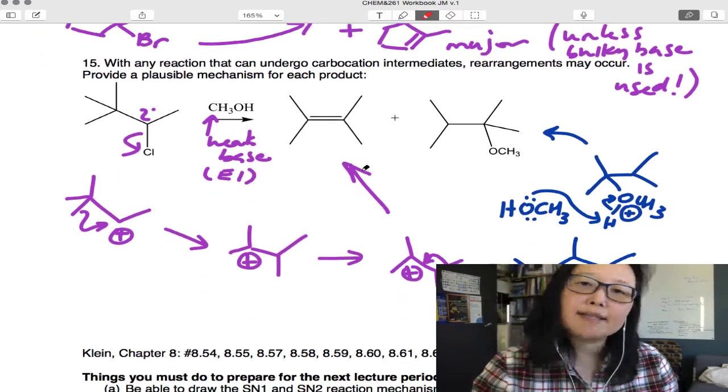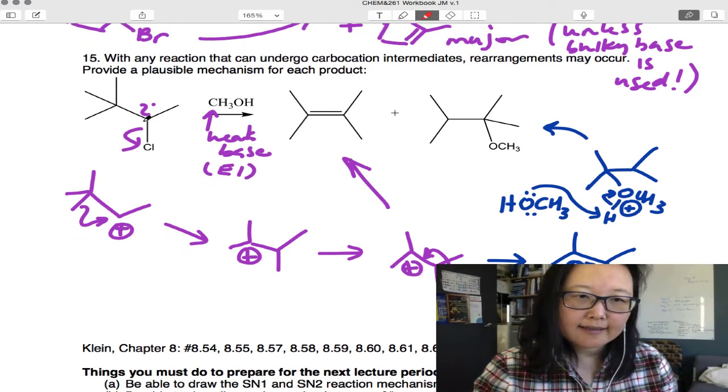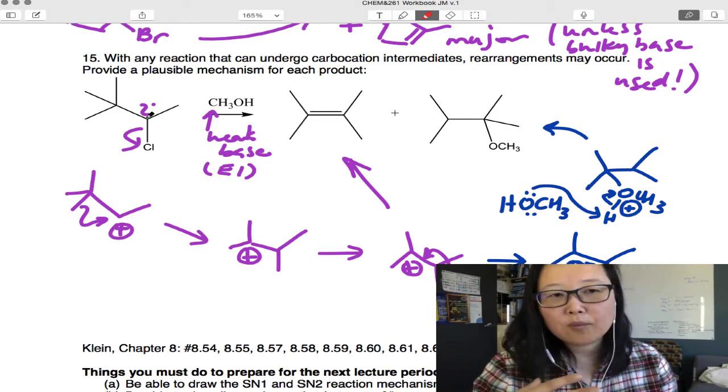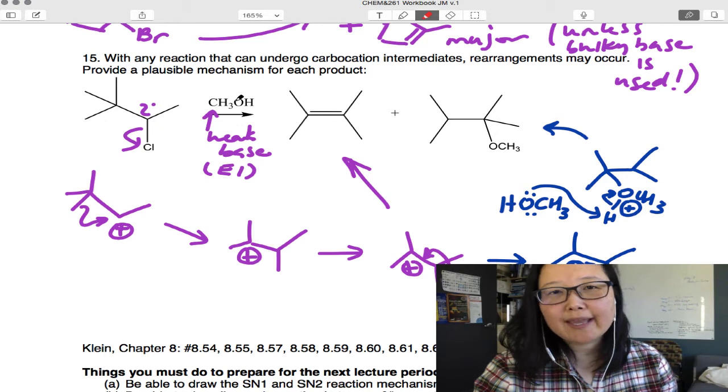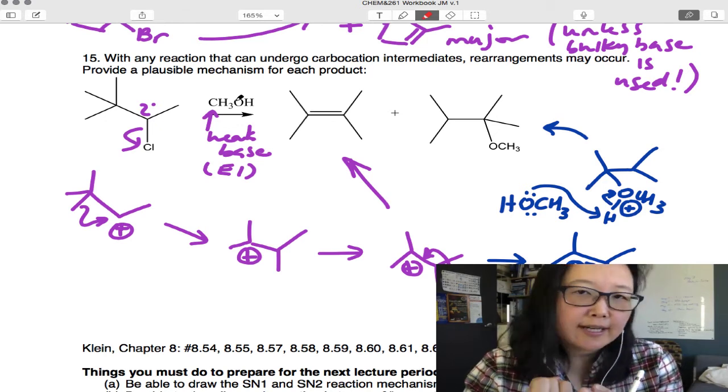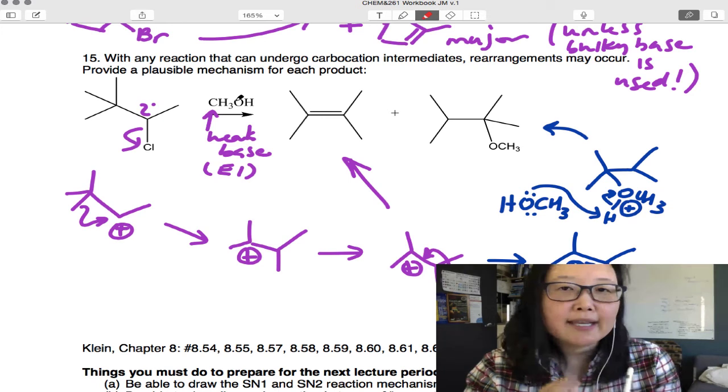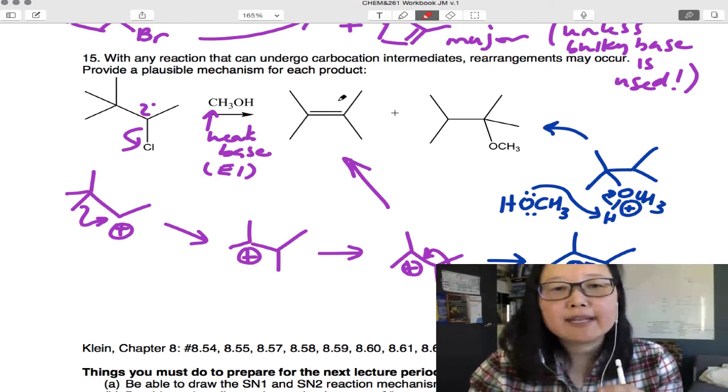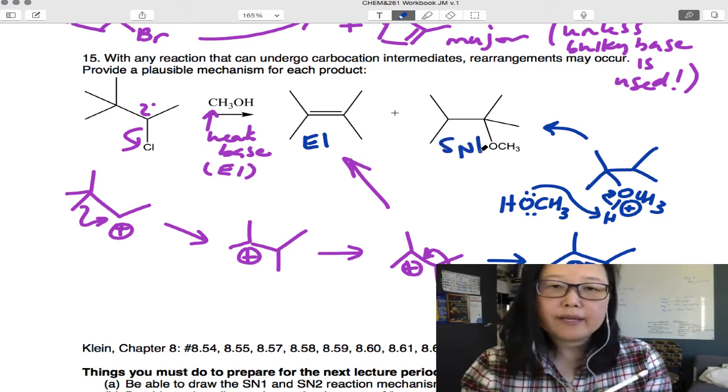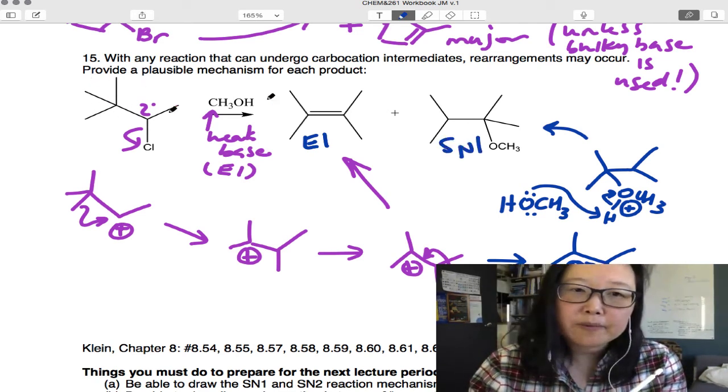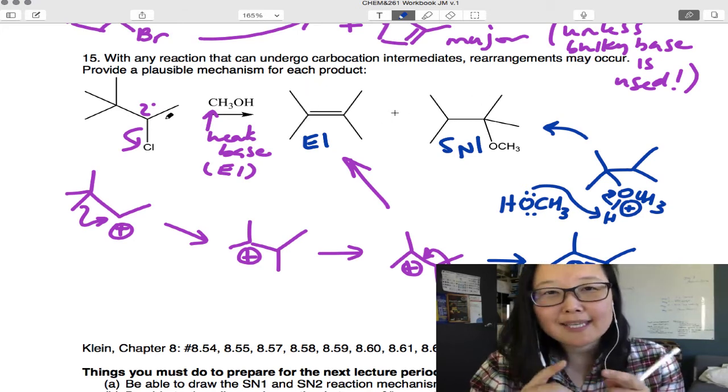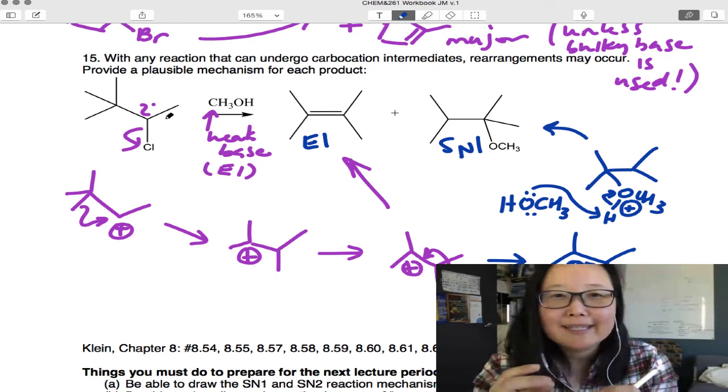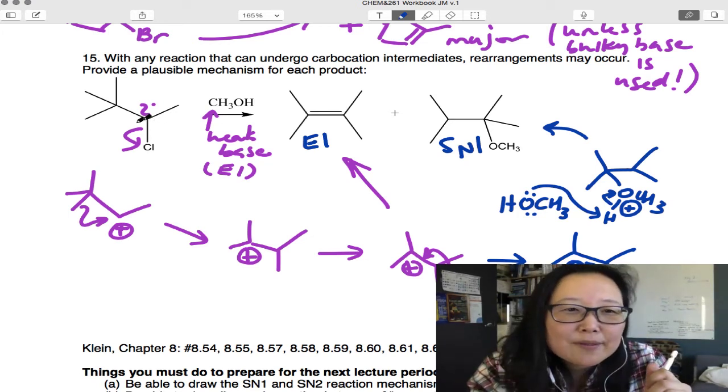As for mechanism practice, we've got a secondary, which means it can be SN1 or E1, or SN2 or E2. They're all possible with secondary. And what we have here is a weak base. So we can't, it's not a good nucleophile, so it's not SN2. It's not a strong base, so it's not E2. So what we have is a combination of an E1 and an SN1. But notice the carbon skeleton, it's got a tert-butyl group, and here it's got isopropyl, right? So something's going on here. Whenever you see a weird arrangement of the carbon skeleton, it's usually a carbocation rearrangement.